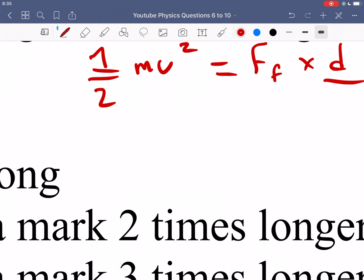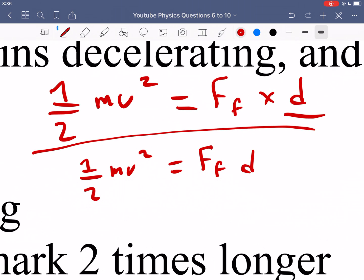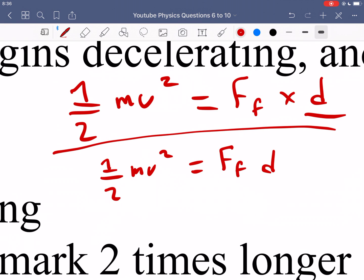And so the way that we can find this is simply by taking the ratio of the two. If we did this equation for one car over the same equation for another car, we get half mv squared equals, so the bottom one is for the second car. So the top one will be for the faster car because we want to know how much longer the skid mark is for the faster car. Bottom one is for the slower car.